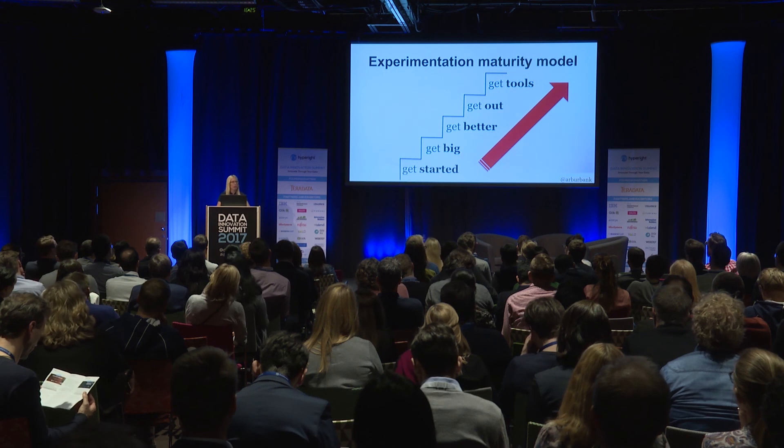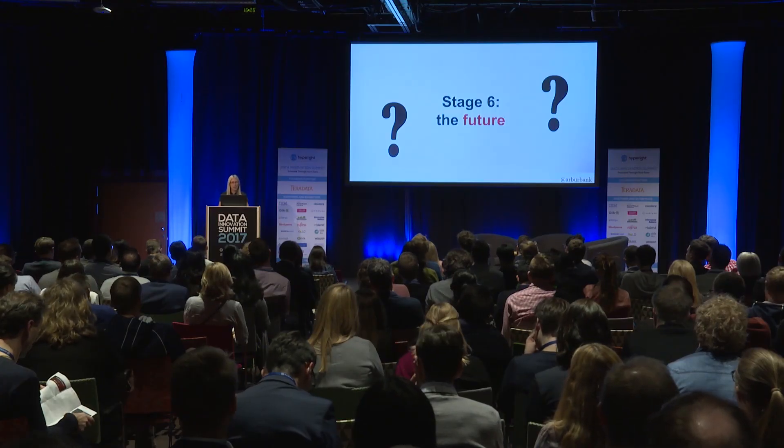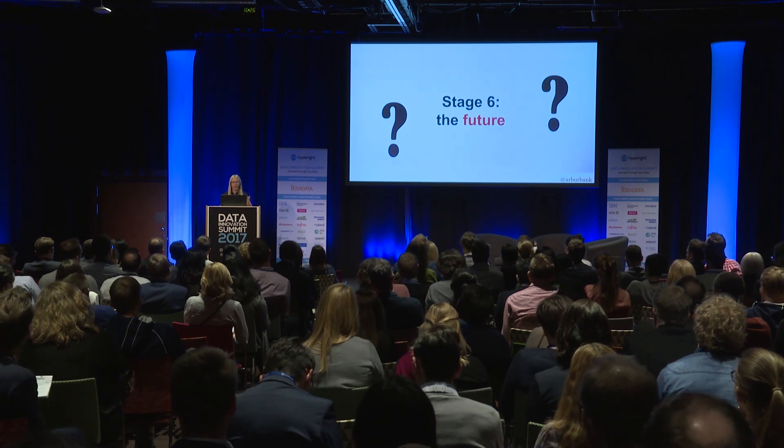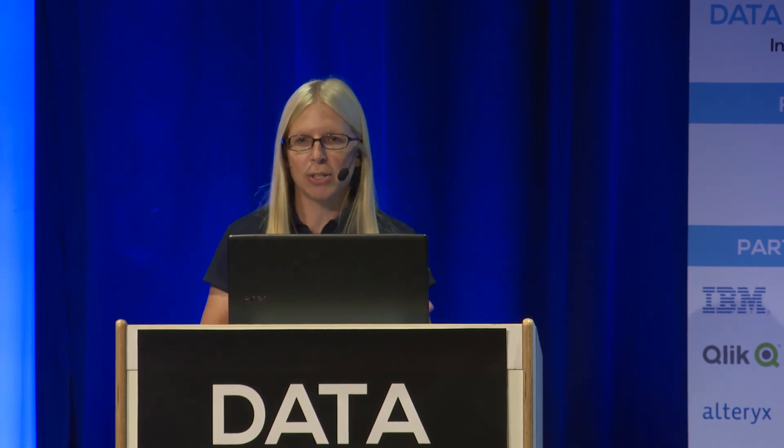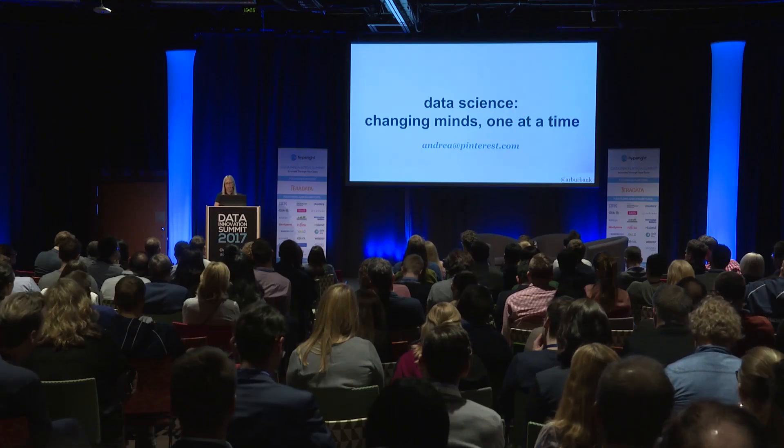So that's the maturity model I'd like to propose. You go from getting started by building the framework, getting big by getting adoption, getting better by helping people run successful experiments, then putting yourself out of business by training other people to run experiments correctly, and lastly building better tools to remove simple mistakes and allow people to make better decisions without you — so humans can focus on the thinking. Maybe there's a stage six, seven, and eight that I don't know about — I'd love to hear about it. But data science and data in general is not just about the software and the statistics. You're not going to have success with A-B testing unless you get adoption from your company about why it's important — and that's a human part, a building-a-culture part, that's showing your value again and again. Data science: changing minds one at a time. Thank you.